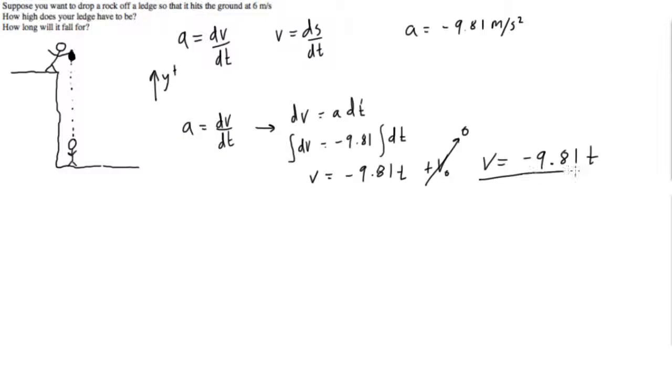So let's make our expression for position now. So we have, this is going to be very important to us in a minute. So we have again, we have v is equal to ds dt.